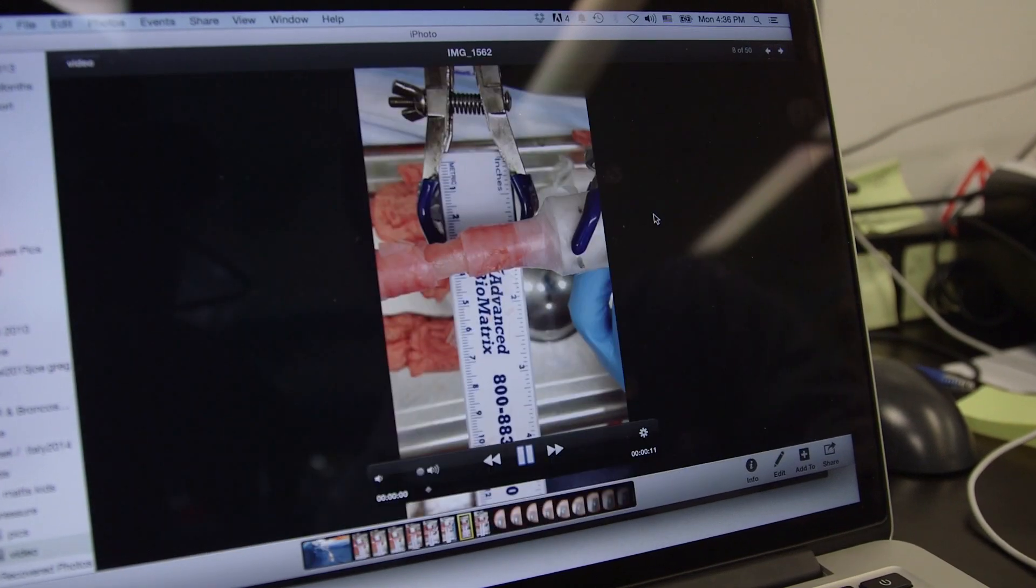The trachea is basically a tube that connects the throat to the lungs. You can have a scenario where a portion of the trachea needs to be removed, and when we remove a portion of the windpipe, we usually have to put the two ends back together.